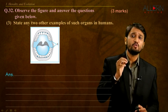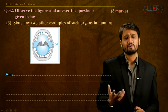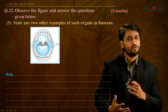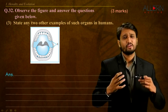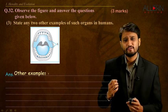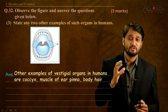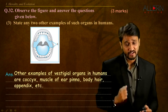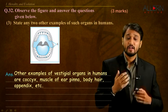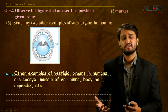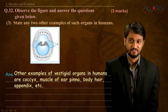The third and last question related to this image is: state any two other examples of such organs in humans. There are so many different vestigial organs — we can mention more than two. Other examples of vestigial organs in humans are the coccyx, which is the tailbone, then the muscles of the ear pinna, body hair, and the appendix, among many others. So that is your answer.